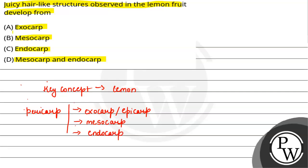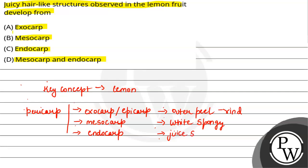इसमें क्या होता है? जो exocarp होता है, यह lemon में outer peel बनाता है — उसका छिलके वाला part जिसको हम rind बोलते हैं. जो mesocarp होता है, यह बनाता है white spongy layer. और जो endocarp होता है, inner most layer, वो बनाता है जिसमें juice sacs and vesicles present होते हैं. So जो juicy area होता है, वो endocarp होता है.